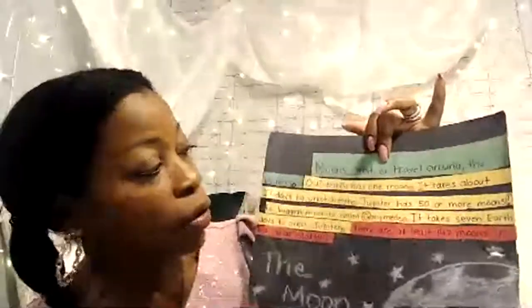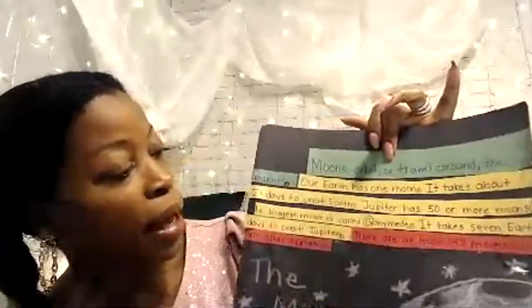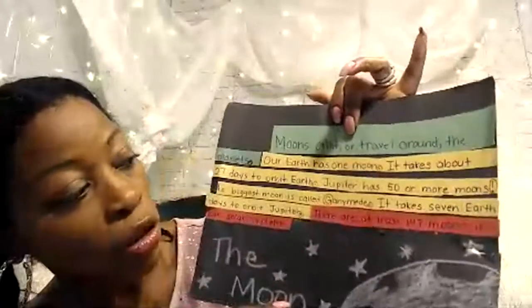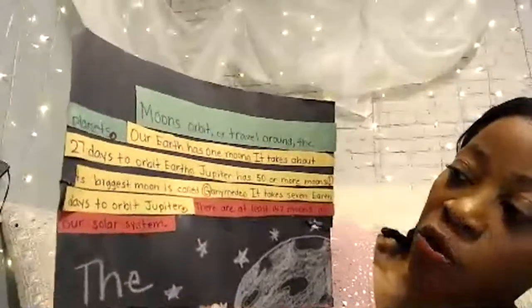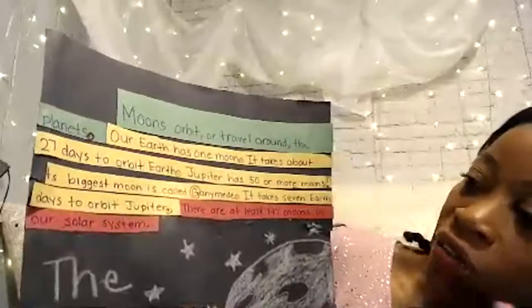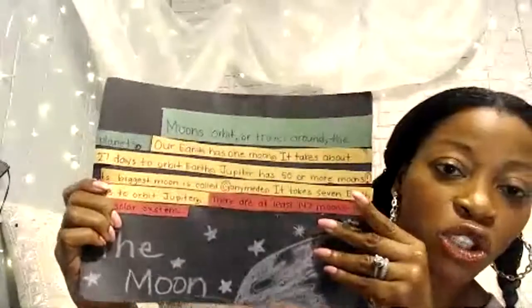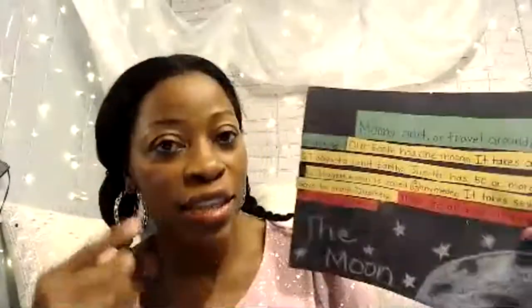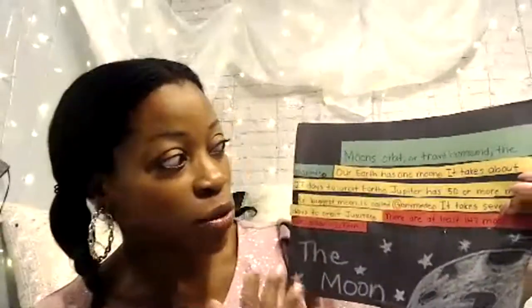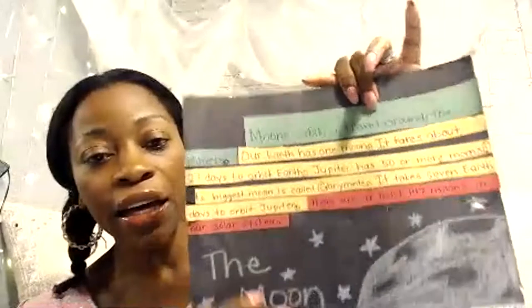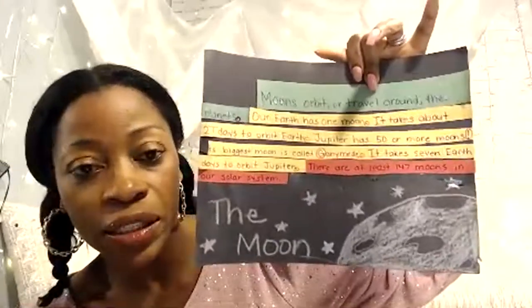So we have our supporting sentences in yellow — yellow means slow down, be a little more reflective about what you're going to write. We have: 'Earth has one moon,' 'It takes about 27 days to orbit Earth,' 'Jupiter has 50 or more moons,' 'His big moon is called Ganymede,' and 'It takes seven Earth days to orbit Jupiter.' I circle the periods to show sentences and to designate that we end with some kind of punctuation.